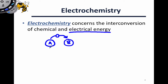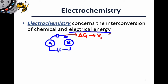Conversely, we can apply a voltage to drive electron flow in the opposite direction of the spontaneous direction. So electrochemistry is concerned both with the conversion of the chemical free energy of a reaction into a voltage and a current, as well as the conversion of an applied voltage to chemical energy.